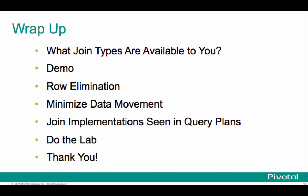In this session, I just wanted to go over what join types are available to you, walk you through a quick demo, kind of take you through how data is eliminated through row elimination and projection of columns, and how we look to minimize data movement and joins. And then we just looked at some of the joint implementations that you'll see in the query plans: hash joins, sort merge joins, and nested loop joins. At this point, it'd be great if you could just go directly into the lab and try some of this stuff out to really make this a little bit more concrete. Thanks very much for your time today.